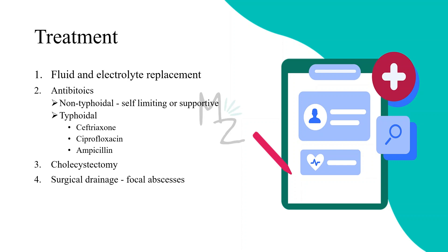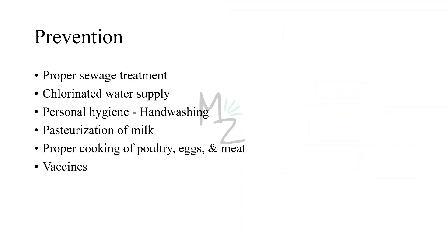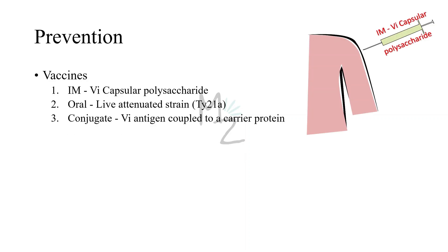Prevention: properly treating sewage, using chlorinated water, maintaining personal hygiene including hand washing, using pasteurized milk, and eating properly cooked poultry, eggs, and meat. There are also vaccines available. One contains the Vi capsular polysaccharide of Salmonella typhi and is given intramuscularly. The other contains a live attenuated strain, TY21A, of Salmonella typhi, and is given orally. These two vaccines are equally effective. A new conjugate vaccine against typhoid fever contains the capsular polysaccharide Vi antigen coupled to a carrier protein — it is safe and immunogenic in young children. Vaccines are recommended for those who travel or reside in high-risk areas and for those whose occupation brings them into contact with Salmonella.